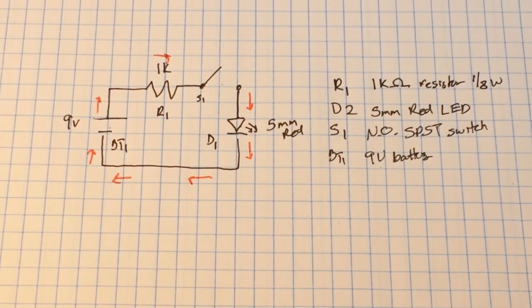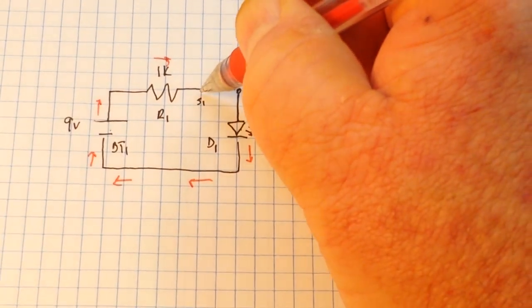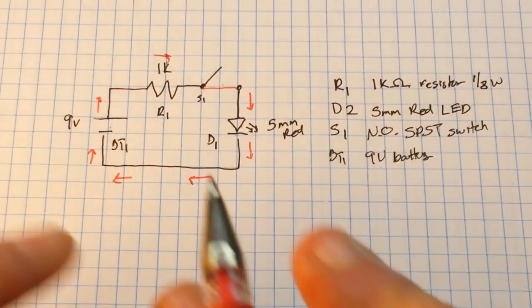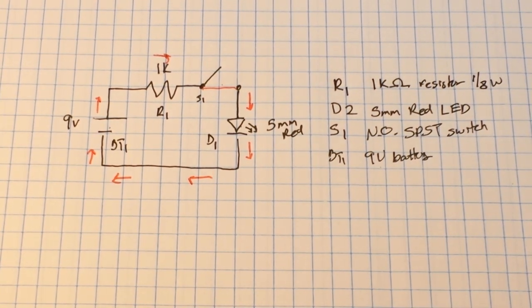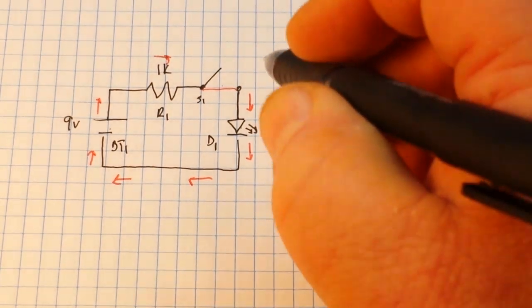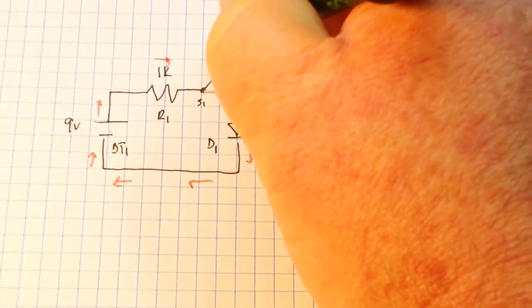But if the switch were closed it would move on, then it moves through the LED until it finally returns to the negative terminal of the battery. So we have to have that circle, we have to have that closed loop for our circuit to work. Just so you understand there, now this is like I said as simple as we can get. This is a simple series circuit.